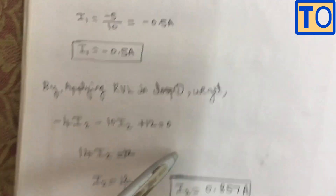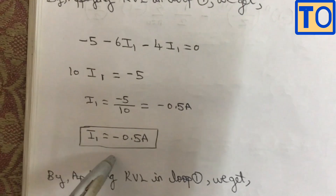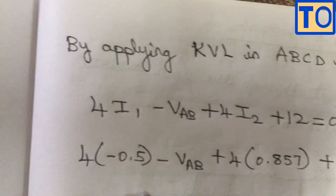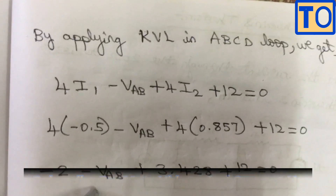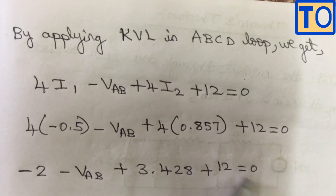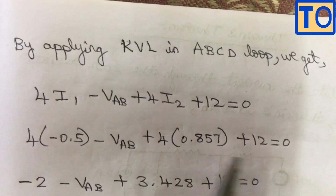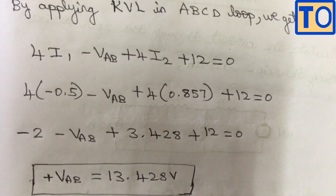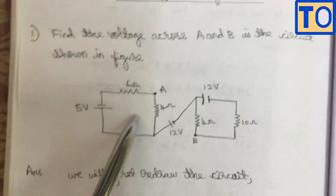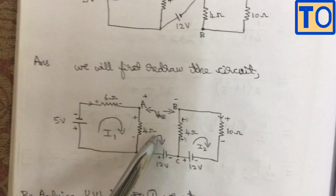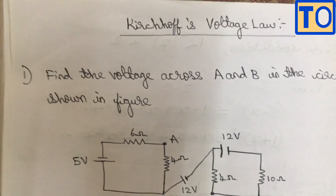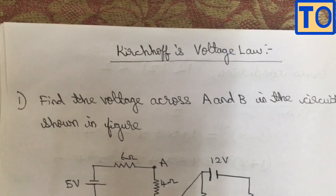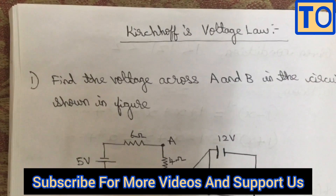Now we will substitute the I1 and I2 values. I1 = −0.5A and I2 = 0.857A. We substitute into the a,b,c,d loop equation. We get 3.428 plus 2 plus 2 equals 0. The voltage across AB — V_AB — is 13.428 volts. This is the voltage across AB. If you found this video useful, please share it.